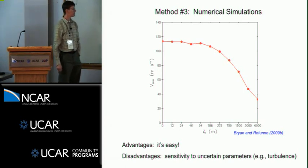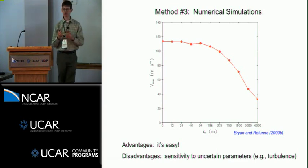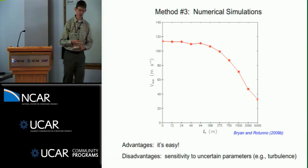Turns out that the disadvantages to this approach is there's great sensitivity to uncertain parameters in the modeling system. I'm going to talk about this mostly in my talk. Here's a figure from a recent paper of mine which shows the maximum sustained winds as a function of one model parameter. Now this is the same sea surface temperature, the same sounding, the same everything.